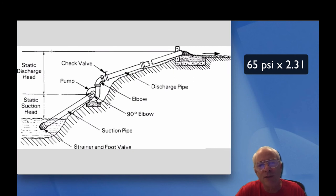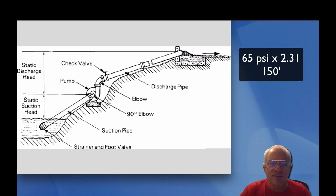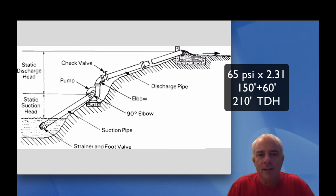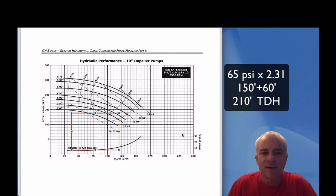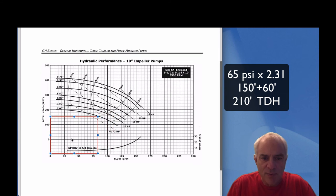65 psi - the way you convert it is multiplying by 2.31. You should get that number in your head: 2.31. You take 65 times 2.31 and that is 150. So 150 more feet of head we have to add to our total dynamic head to pressurize those sprinklers properly. We were at 60, so now we're going to be at 210. Now we would go to a curve that would fit our duty point better.